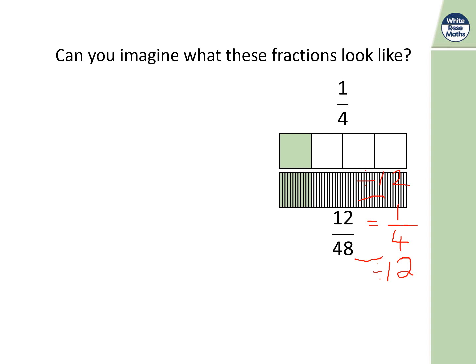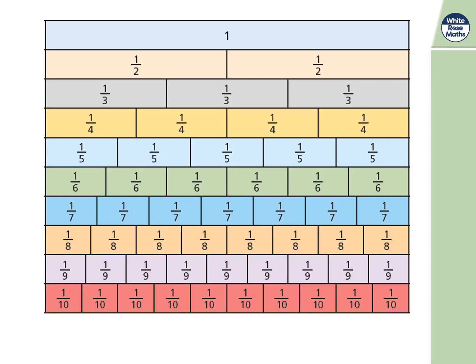Looking at the fraction grid, you have one, a half, a third, a quarter, a fifth, a sixth, a seventh, an eighth, a ninth, and a tenth. You can clearly see that two halves make one, three thirds make one, four quarters make one, and so on up to ten tenths making one. So one eighth plus one eighth equals two eighths, which simplifies to a quarter.